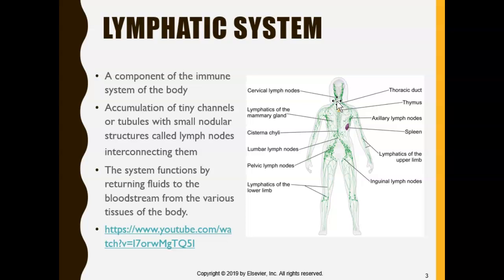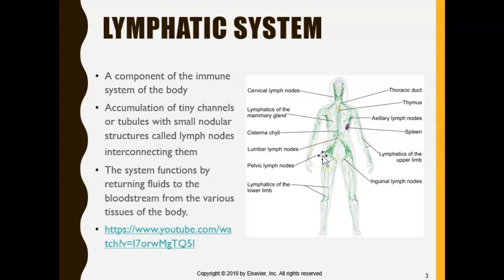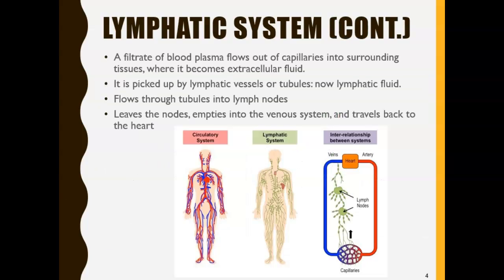So a lymph node is a filter. The lymphatic system gets rid of all the toxins and waste from your body by going through checkpoints — lymph nodes where they examine the lymph fluid and take out all the bad stuff. We'll look at more examples.